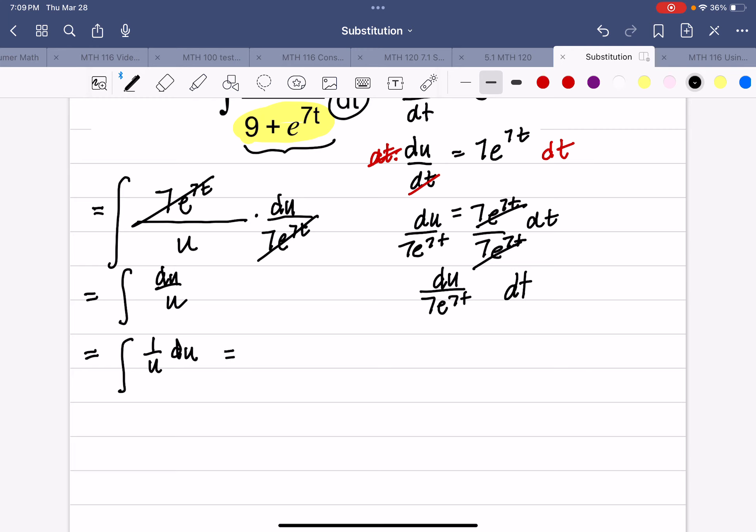And that's the only one where I can't use the power rule and change that u to the negative 1. That's the natural log of the absolute value of u plus c. So my final answer is the natural log of 9 plus e^(7t), and that's in absolute value bars, plus c.